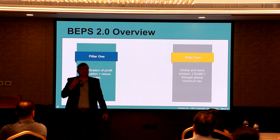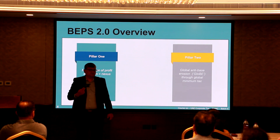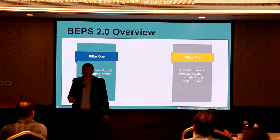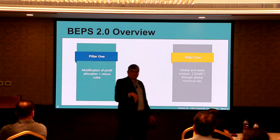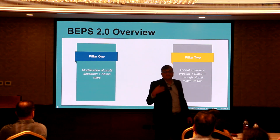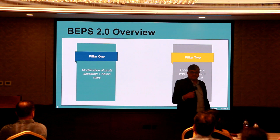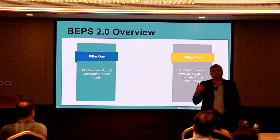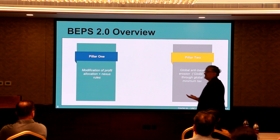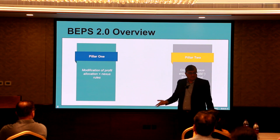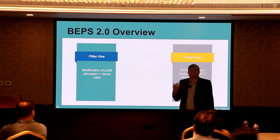When the two pillar solution was proposed, the US was not party to it because the US always thought that it is going to impact their corporates in an adverse manner. Therefore, they didn't want to be party to this entire approach. Then the push and pull — the political negotiation — started, and all of that went on.